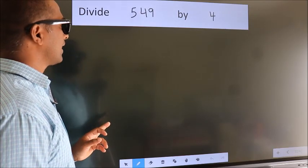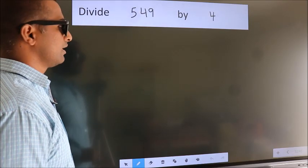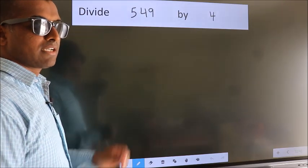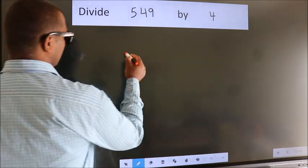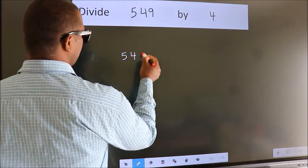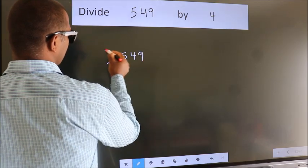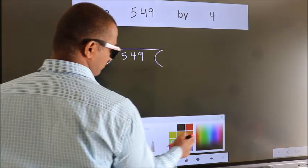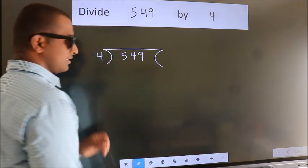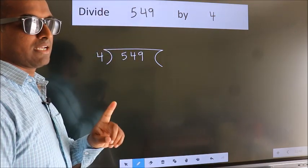Divide 549 by 4. To do this division we should frame it in this way. 549 here, 4 here. This is your step 1.